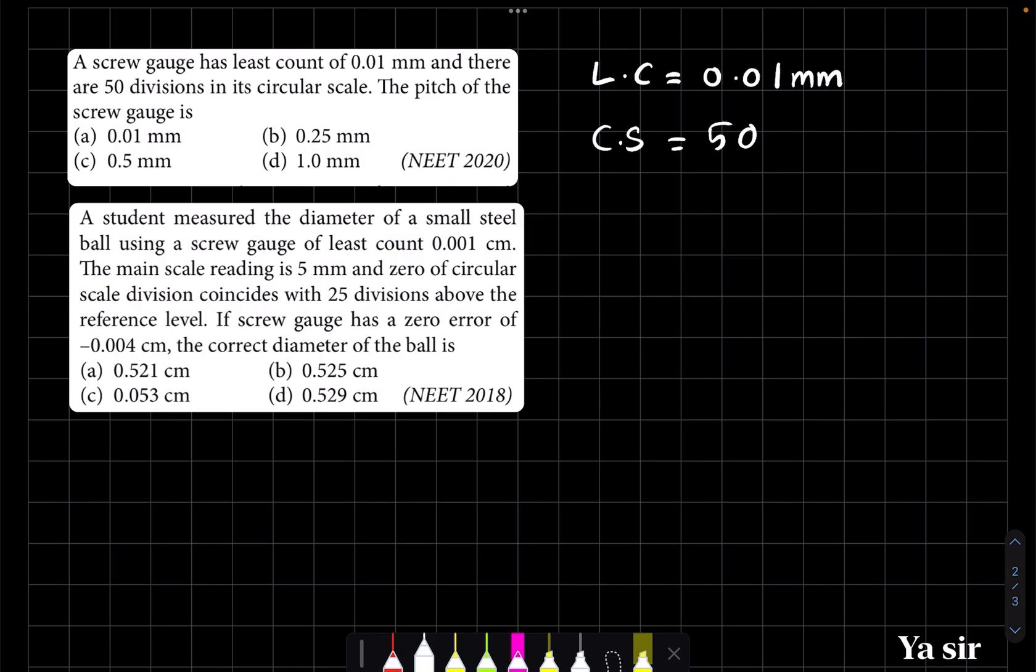We need to find the pitch of the screw gauge. Let's recall the formula: least count equals pitch (or the value of one division in main scale) divided by the number of divisions in the circular scale.